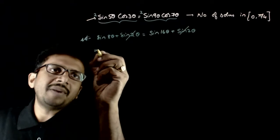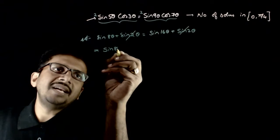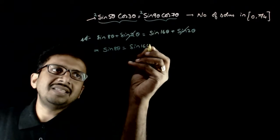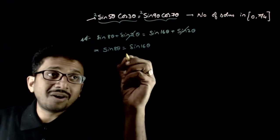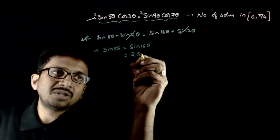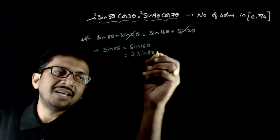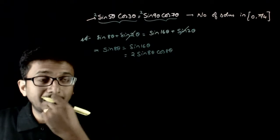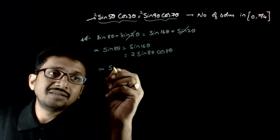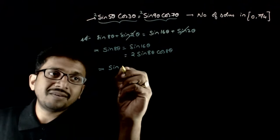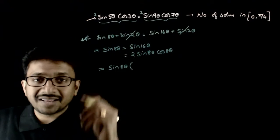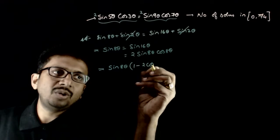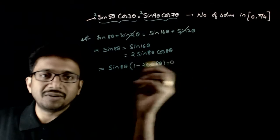This implies sin8θ = sin16θ. Now sin16θ can be written as 2sin8θ·cos8θ. So bringing everything to one side and taking sin8θ as a common factor: